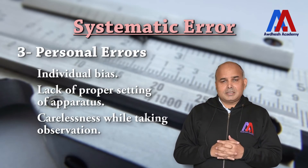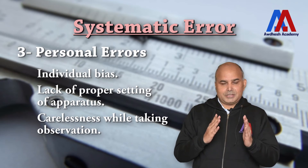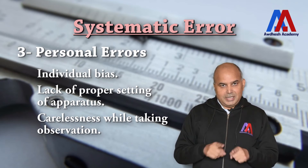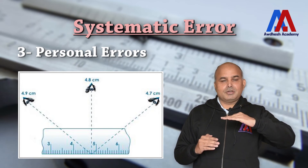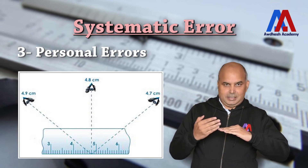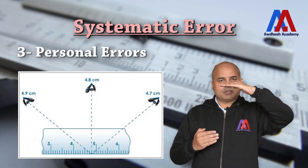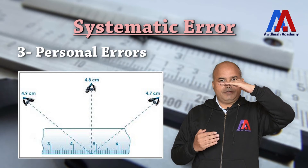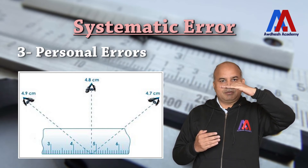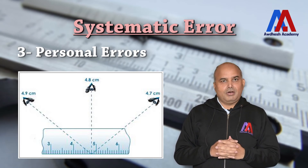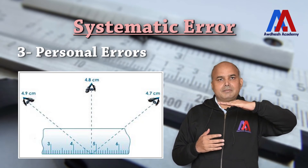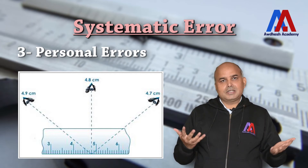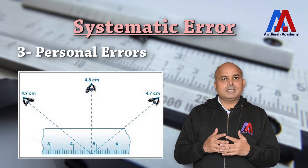The third type is personal error. For example, if you have a tendency to look at a scale from above, you will always measure on the higher side. Ideally, you should view the scale exactly at eye level — viewing from slightly above or below will give wrong dimensions. People tend to consistently look from one side and commit mistakes in the same direction.